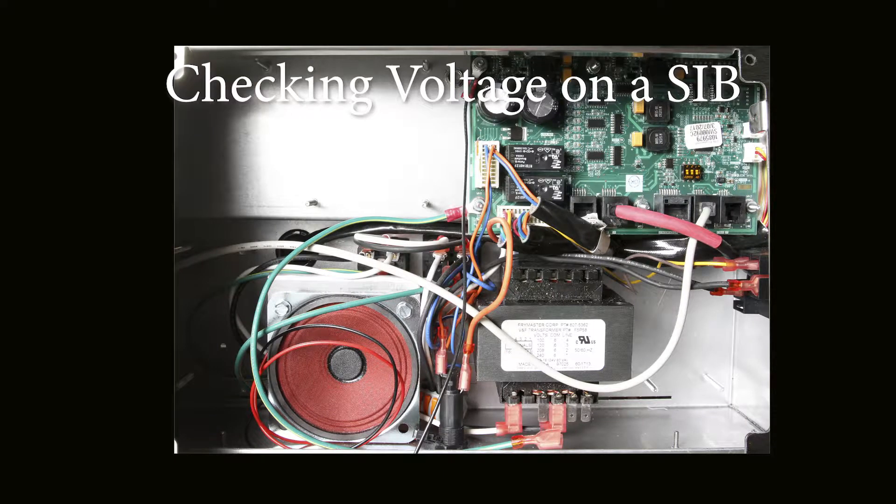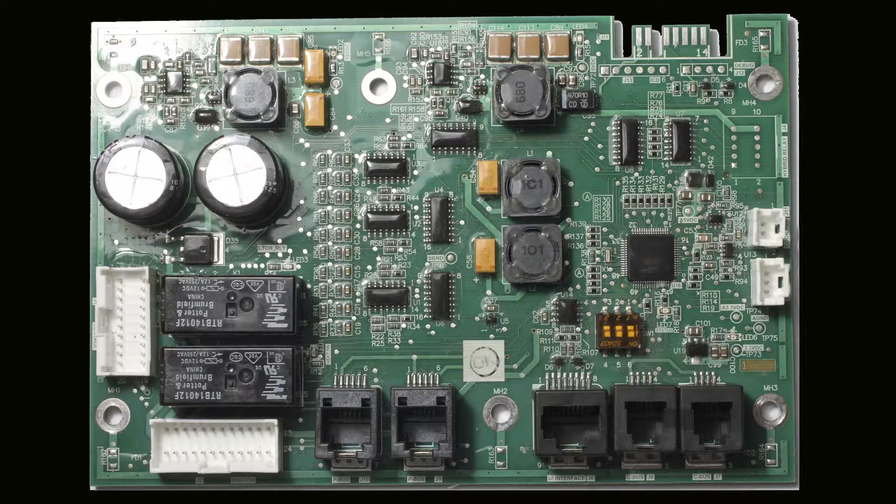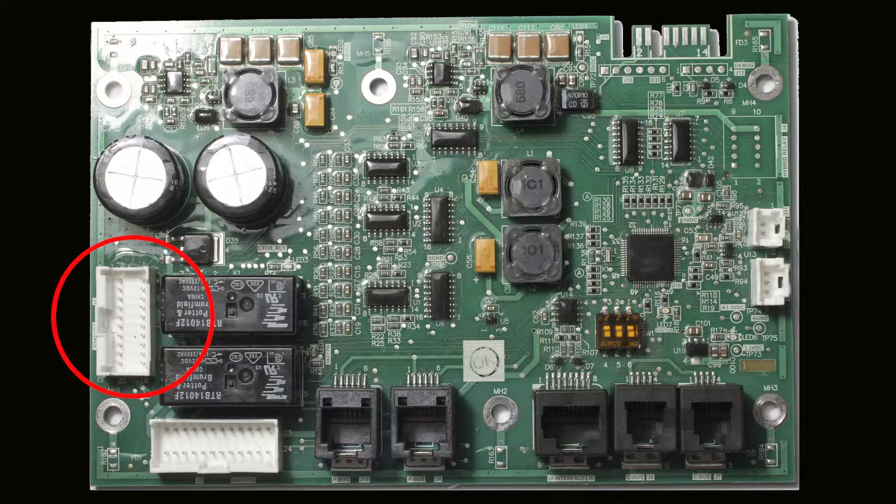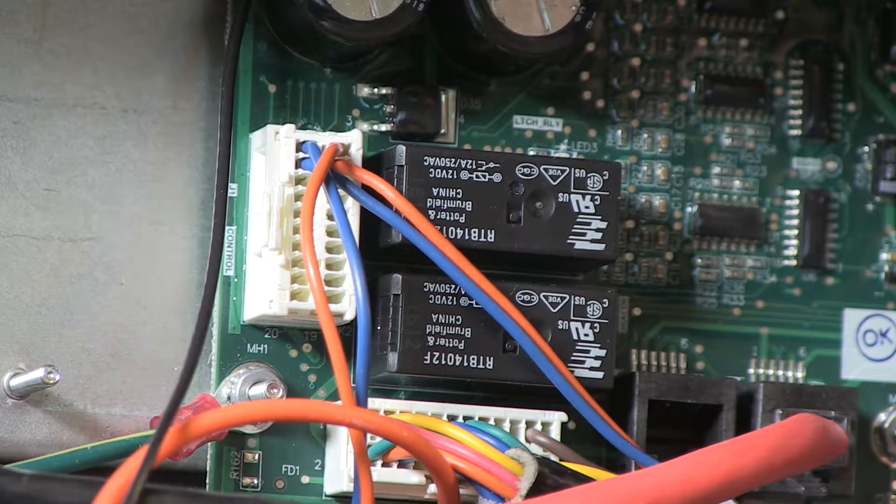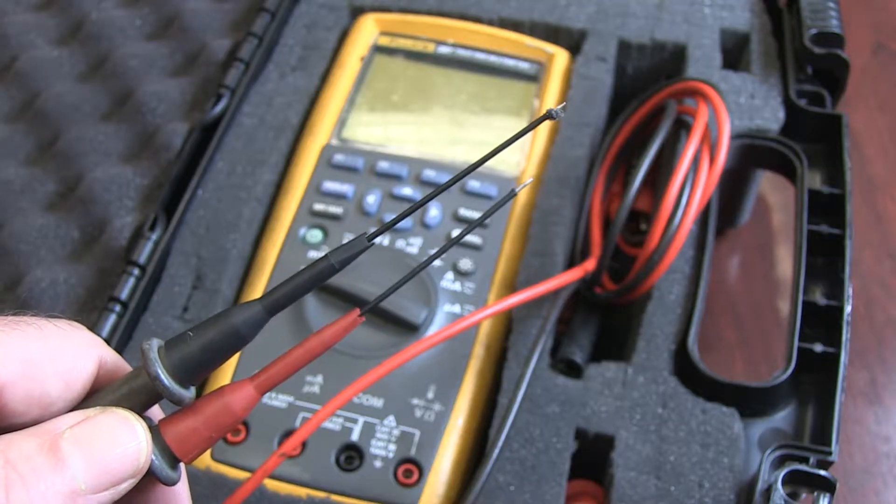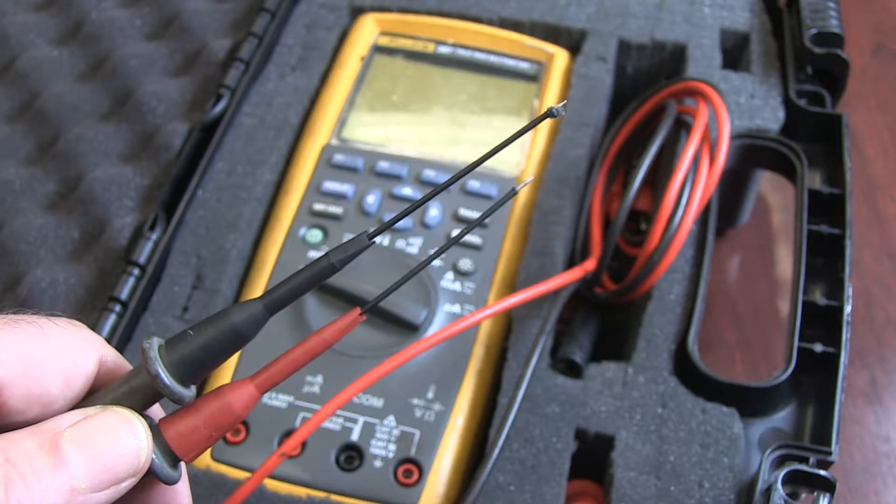Checking voltage on a Smart Interface Board: The Smart Interface Board, or SIB, takes in 24 VAC on pins 1 and 2 on the J1 terminal. Measurement of this voltage must be taken from the back of the harness with the plug in place. Needle extensions are a must to take this reading and others on the board.